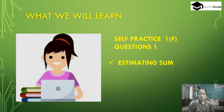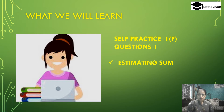Today we will learn and solve self practice exercise questions 1F, questions 1 to 5. The chapter name is 'Knowing Our Numbers' and the topics are estimating sum, estimating difference, estimating product, and estimating quotients. Let's solve some questions.